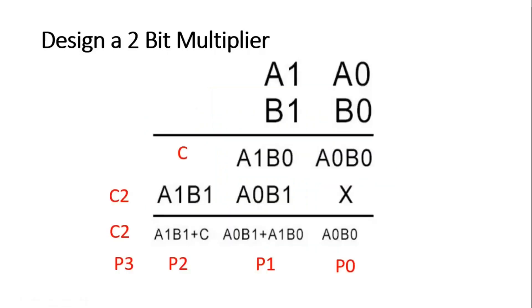Friends, here I have considered two numbers: A which has two bits A1 and A0, and the second number is B which has two bits B1 and B0. How we do binary multiplication? Firstly we multiply B0 with A0 and we write it here: A0 into B0. Then we multiply this A1 by B0, so I am writing A1 into B0 here. Here we write the multiplication sign.